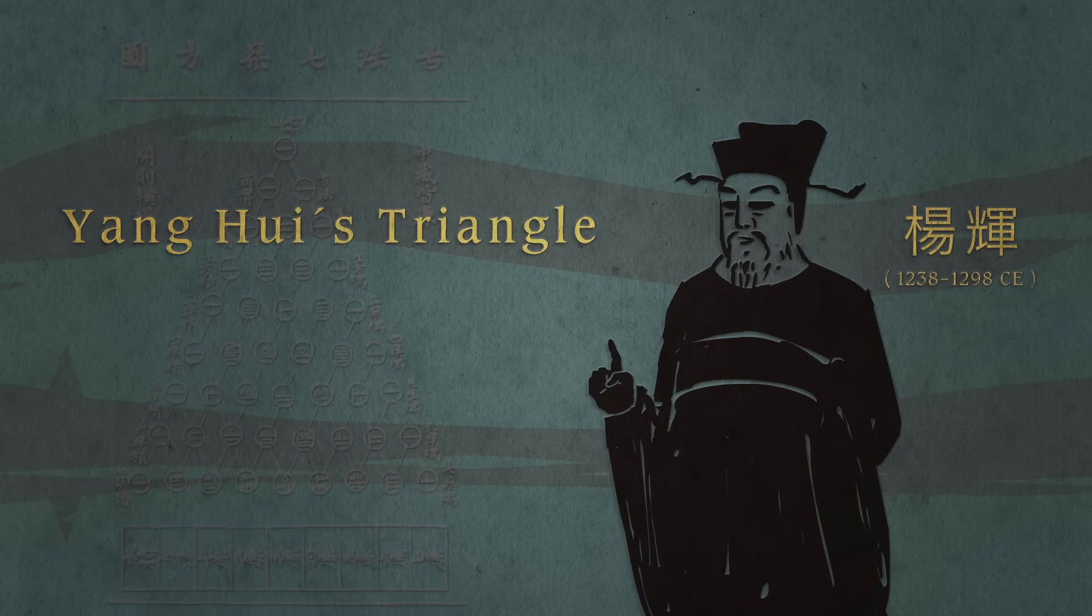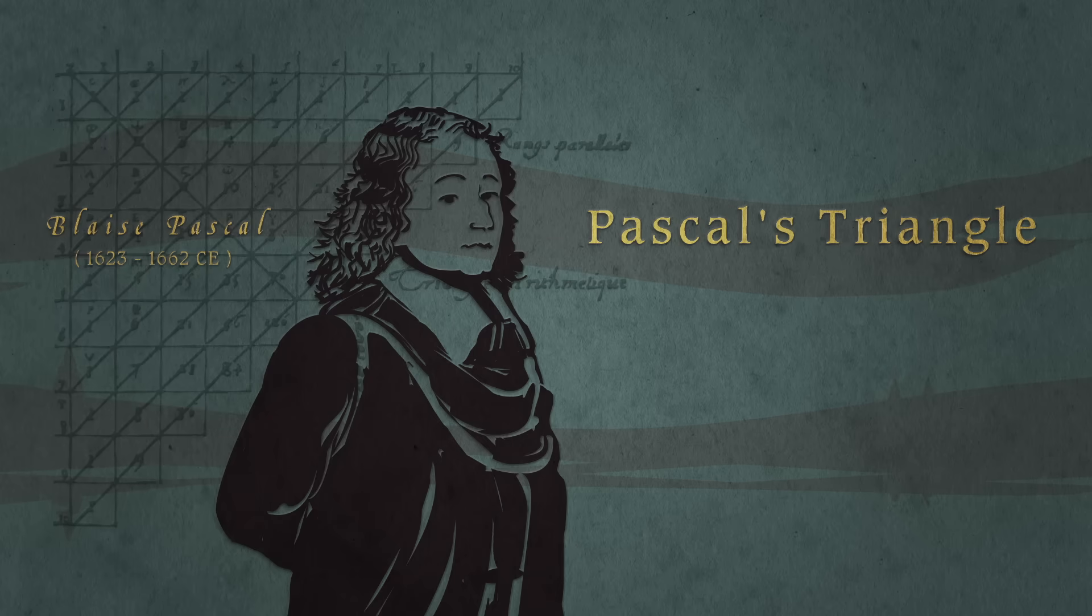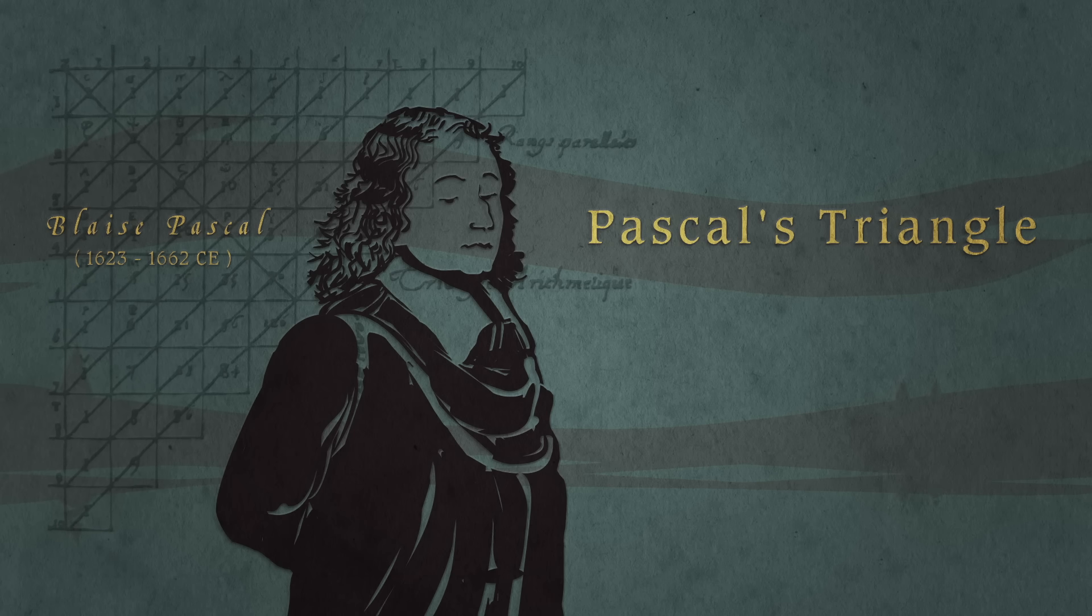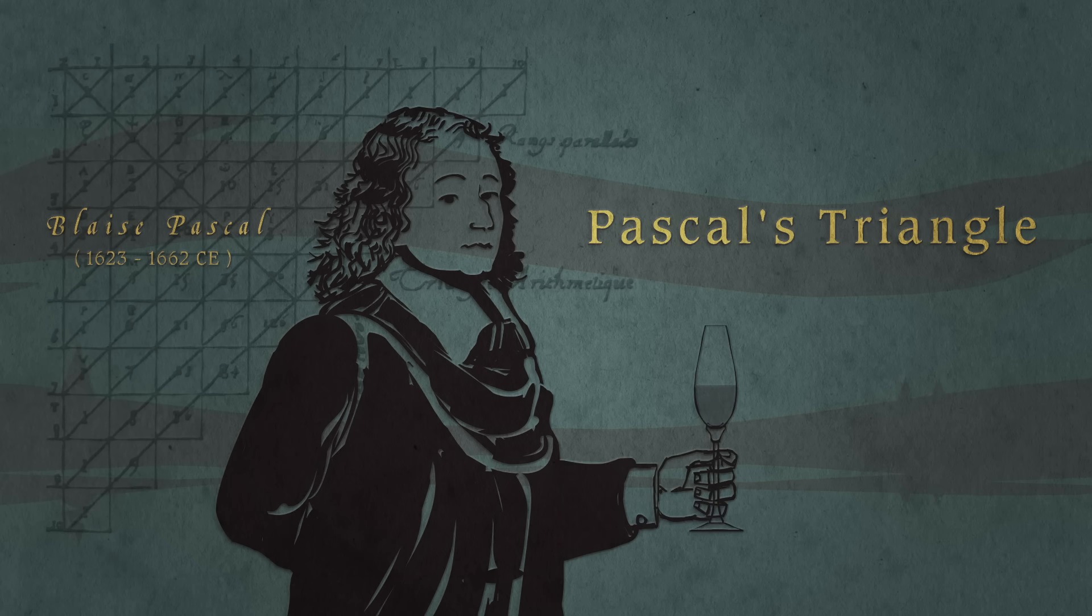To much of the Western world, it's known as Pascal's Triangle, after French mathematician Blaise Pascal, which seems a bit unfair since he was clearly late to the party. But he still had a lot to contribute.